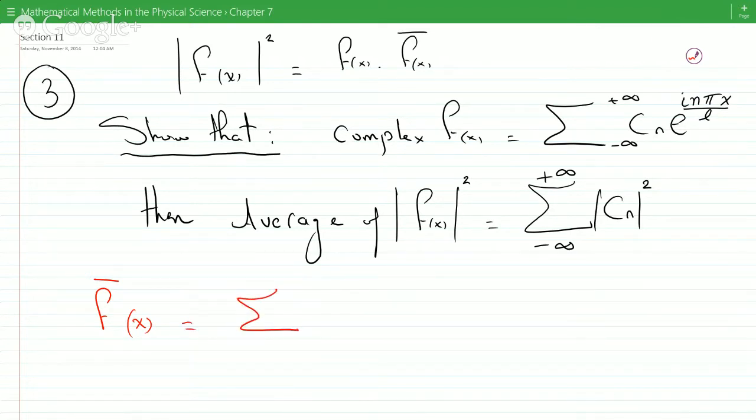The complex conjugate of the complex Fourier series will have to be, whatever those two coefficients are, we'd have to take the complex conjugate of those from minus infinity to infinity.